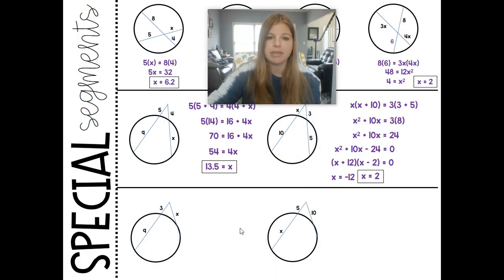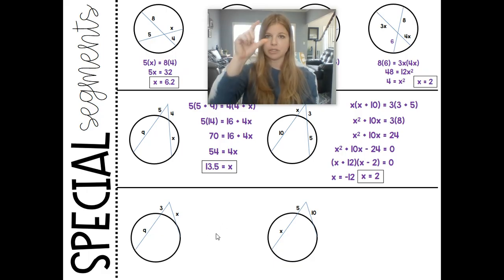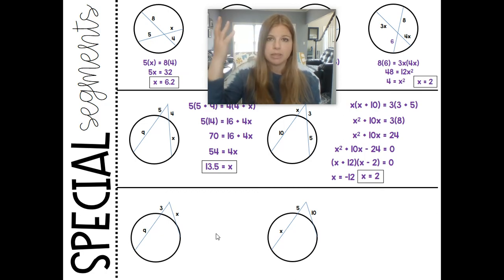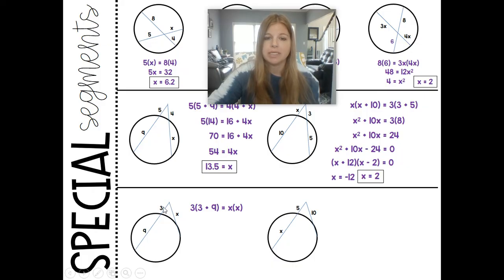Let's take a look at the last two problems here. So this is also the same idea. It's the external times the entire length is equal to the tangent squared because it's really just the tangent times the tangent. You don't have an external, the full length. They're the same thing. So this would be 3 times 3 plus 9 is equal to x times x. So then I end up with 3 times 12 equals x squared, which is 36. Square root is 6. It becomes a pretty easy problem.